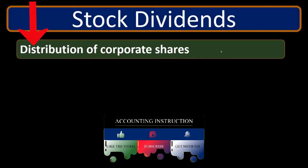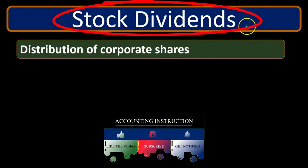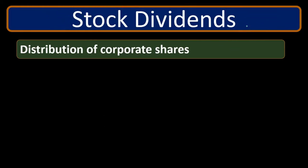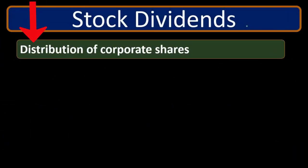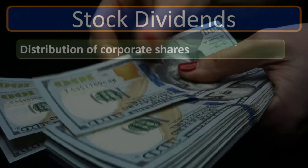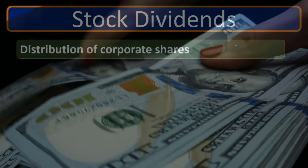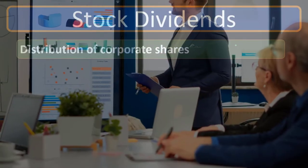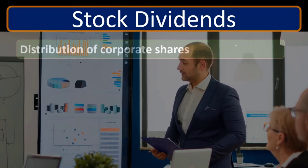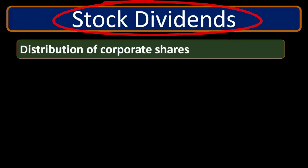It is possible to give distributions of something other than cash. The common thing for a corporation would be to give a stock dividend. For a sole proprietor or partnership, you could get paid in equipment or something like that — the common form is cash, but other formats are possible. For a corporation it's more difficult because it has to be uniform; we can't give something to one shareholder that we don't give to the rest. What we can do is give a stock dividend, because that's something we can distribute uniformly.